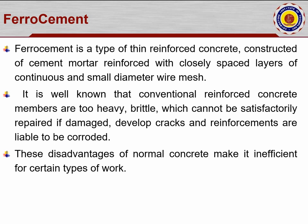Normal concrete structures such as beams of 230 by 300 mm and columns of 300 by 300 mm, when they fail, the repair work is not satisfactory — cracks repeatedly develop and reinforcement starts to corrode. These disadvantages of normal concrete make it inefficient for certain types of work, and ferrocement can be adopted instead.